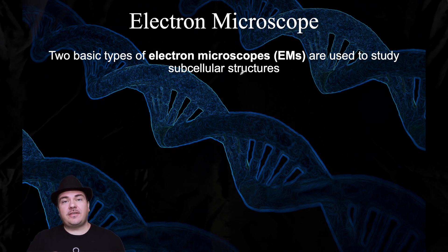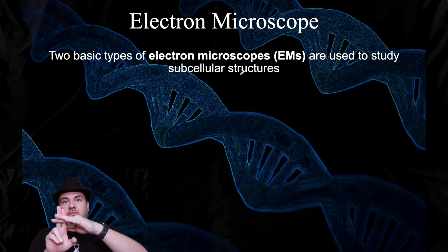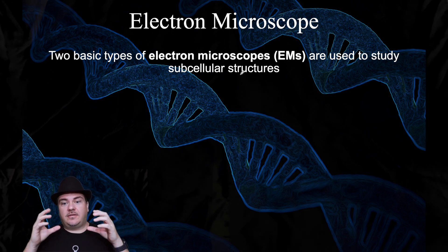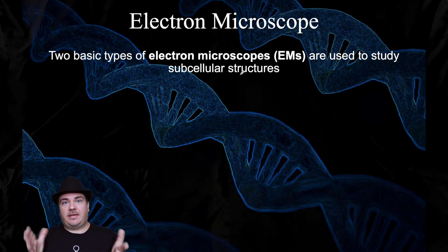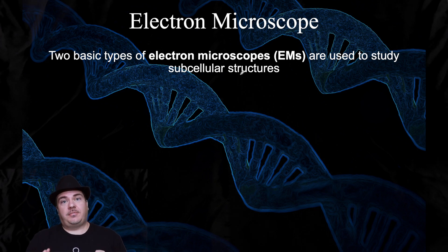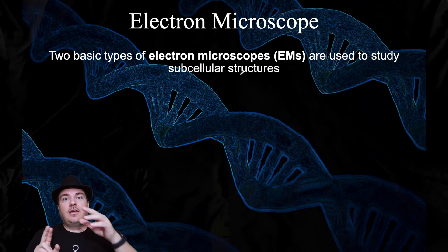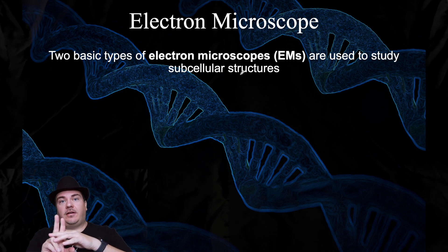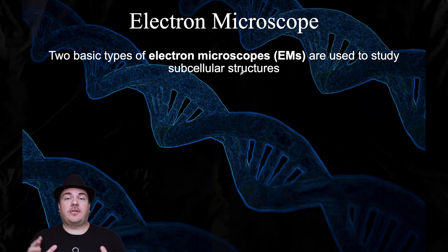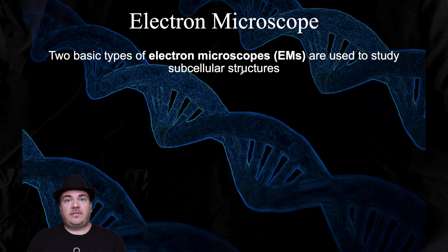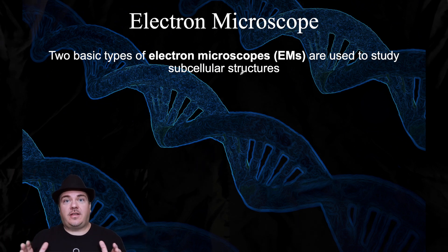The electron microscope concept is very similar to a light microscope. In a light microscope, light comes up, passes through your cells, then passes through a series of glass lenses to get to your eyes, and those glass lenses refract the light and make the image look bigger. In an electron microscope, the same concept applies except instead of a beam of light passing through your cells, it's a beam of electrons. The electron beam passes through your cells and then needs to be focused — but you can't focus electrons with glass lenses, so instead you use electromagnets to focus the electron beam.